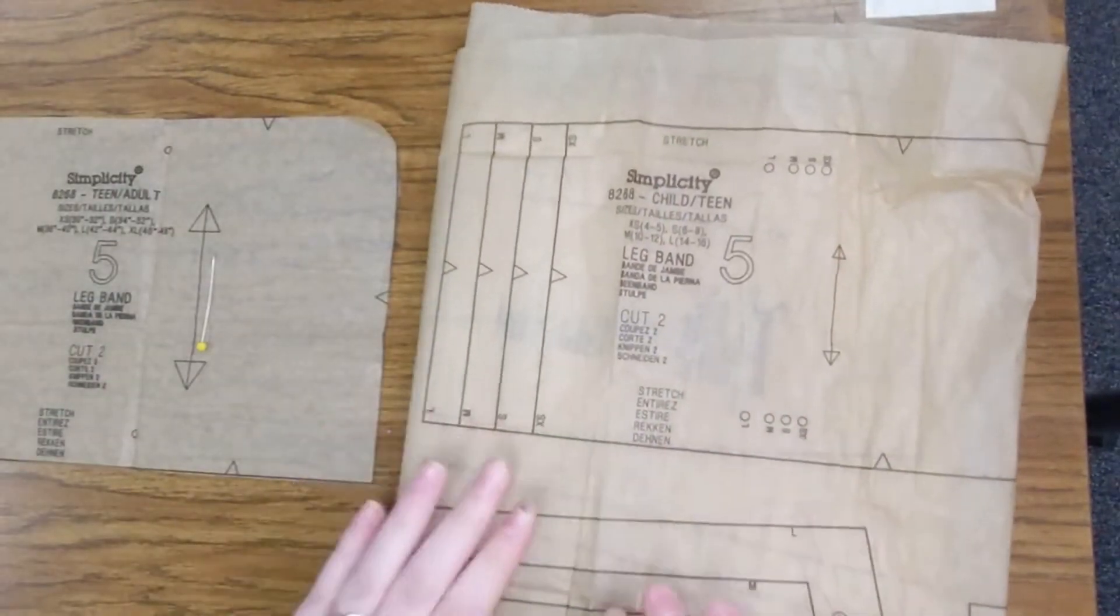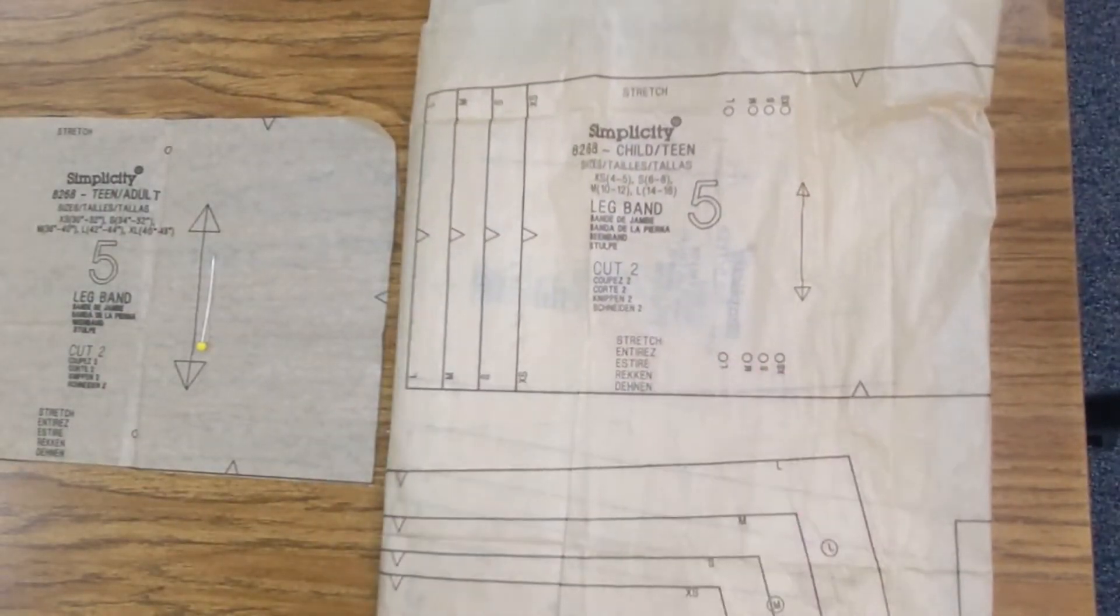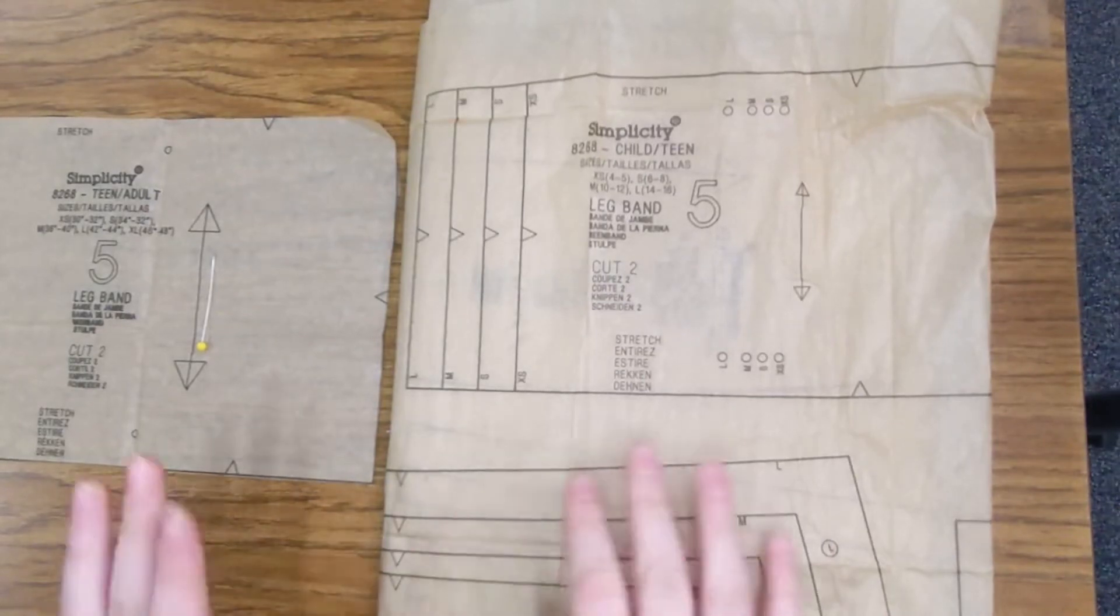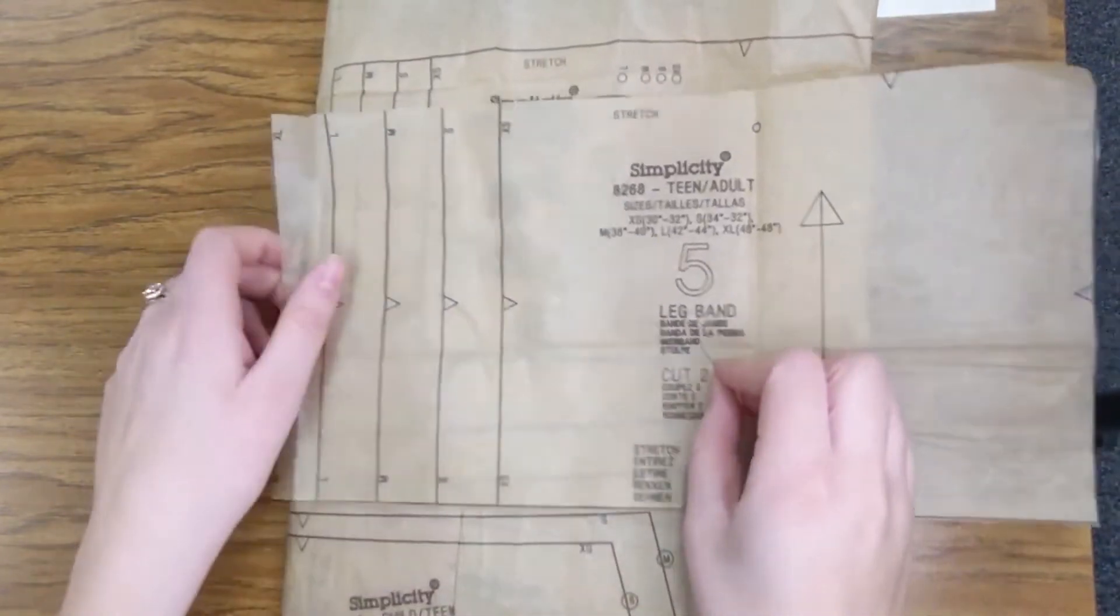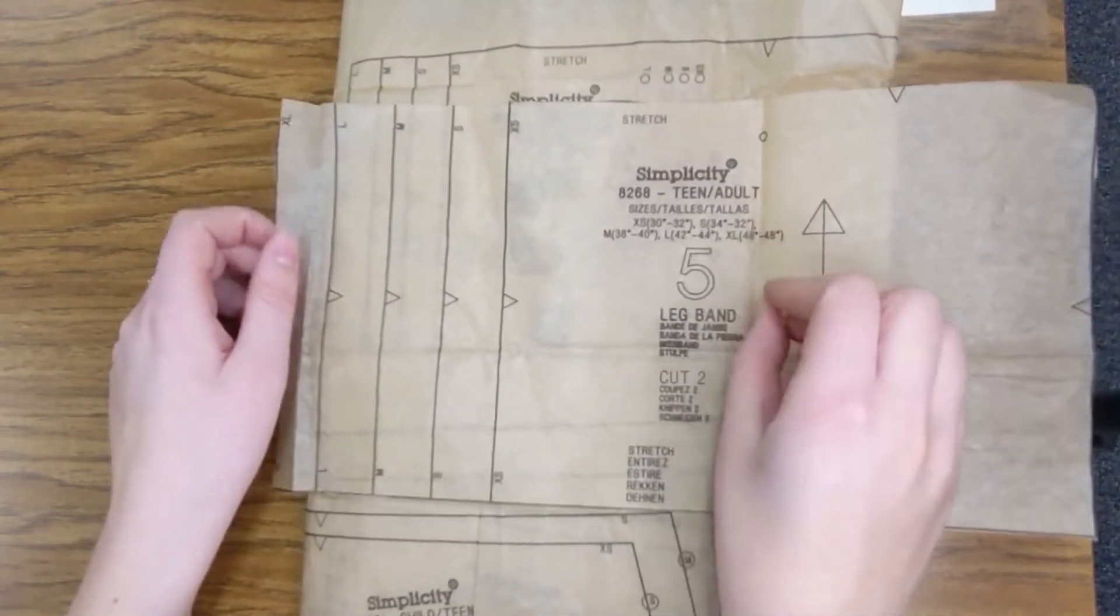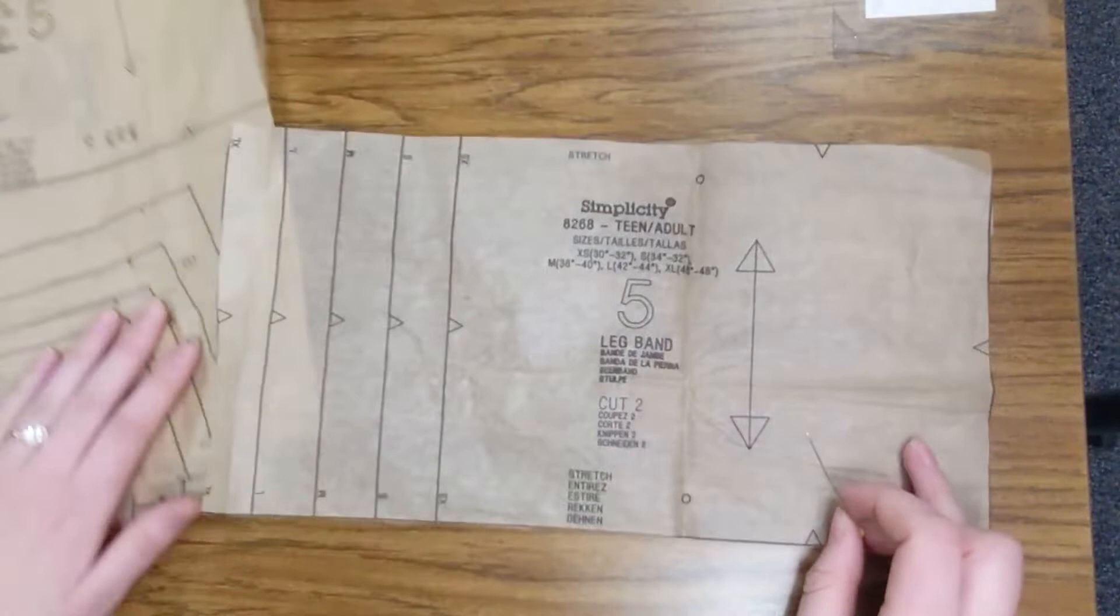It's all one big piece of paper. You're going to put this aside. If you plan on making kids joggers, you can save it. If not, just throw it away so you don't get confused. And then the other sheet, I already cut mine out, but it looks like this. It will say teen slash adult on it. So, that's the one you want, and you will cut out that piece.